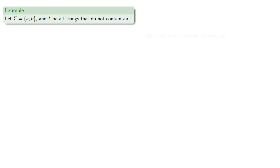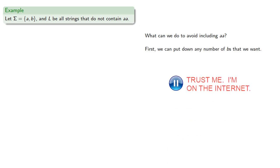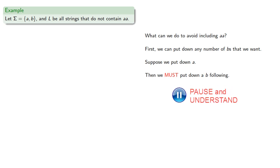What can we do to avoid including AA? First, we can put down any number of B's that we want. Now suppose we put down an A, then we must put down a B following.